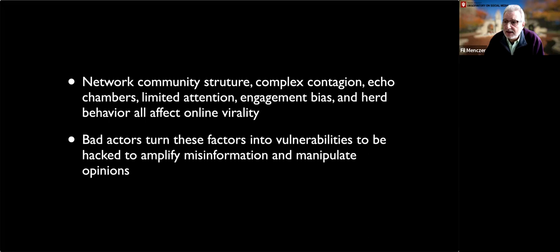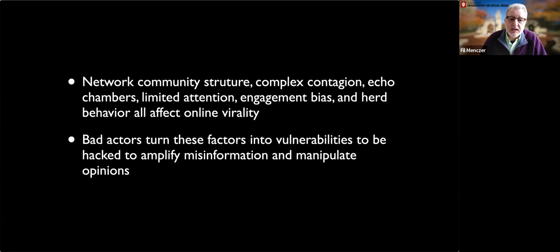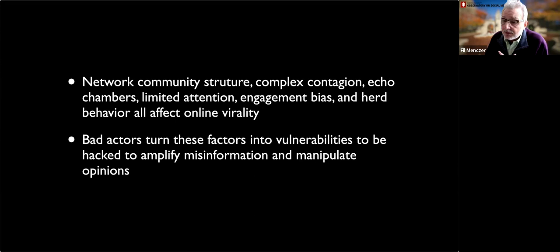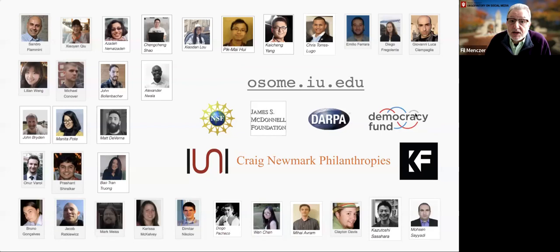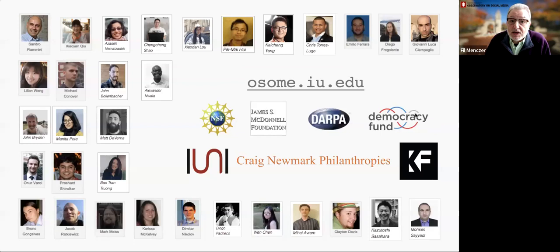To summarize: network community structure, complex contagion, echo chambers, limited attention, engagement bias, and herd behavior are all factors impacting online virality. Bad actors can exploit them, turning these factors into vulnerabilities that can be hacked to amplify misinformation or manipulate opinions. Thanks to my wonderful students and collaborators — this is their work — and to our funders.